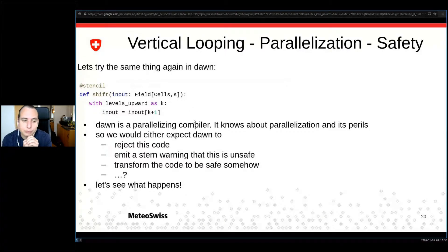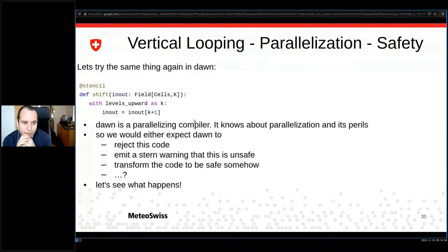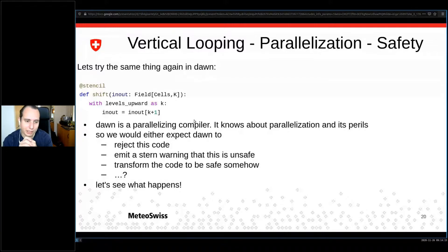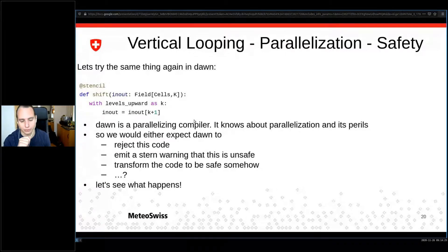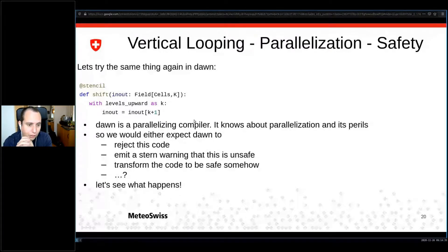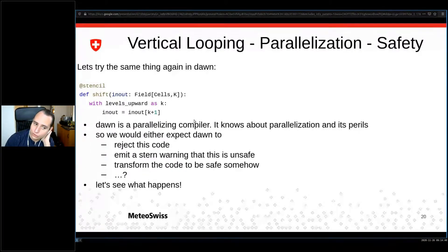Now let's look at the same thing written in Dusk, with the intention of feeding it into Dawn — a parallelizing compiler. We would expect Dawn to do something rather than blindly compile it. Dawn could say 'this is not safe, I won't transpile this,' it could warn you sternly — which would be a bad option — or Dawn could try to make it safe. Let's just see what happens.